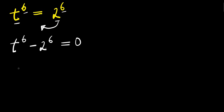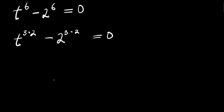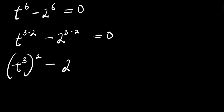So we can have this as t to the power 3 times 2, which is 36, minus 2 to the power 3 times 2, which is 36, and this equals zero. If you have a power x times y, this equals a power x times a power y. So this will be t power 3 to the power of 2, minus 2 power 3 to the power of 2, equals zero.